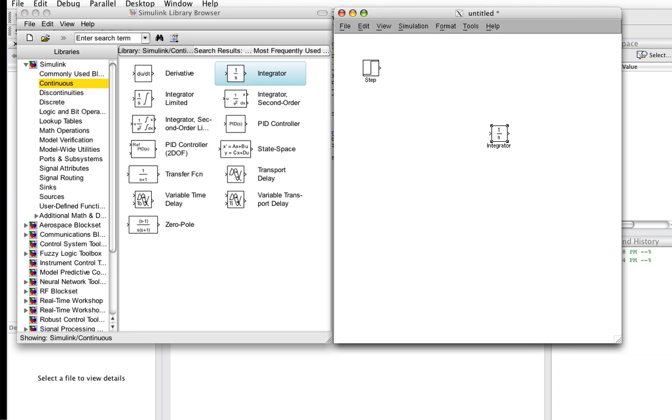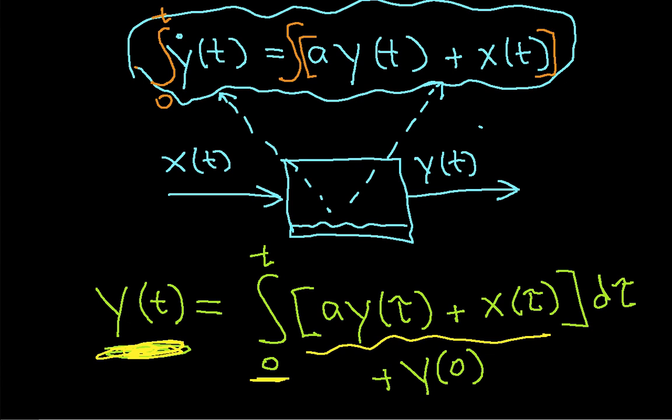The input to the integrator, if we go back to our equation, is this mess. So I need to be able to compute a times y, add to it my input x, and integrate it. So that's what the input of the integrator is going to be.